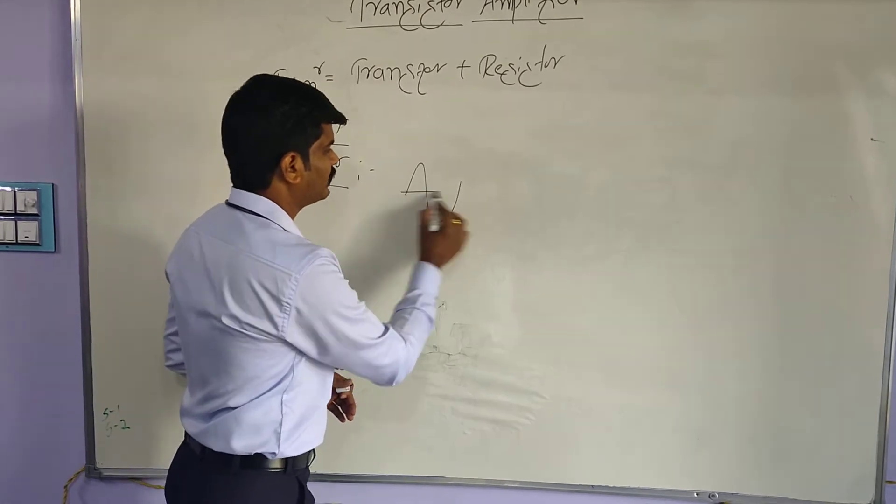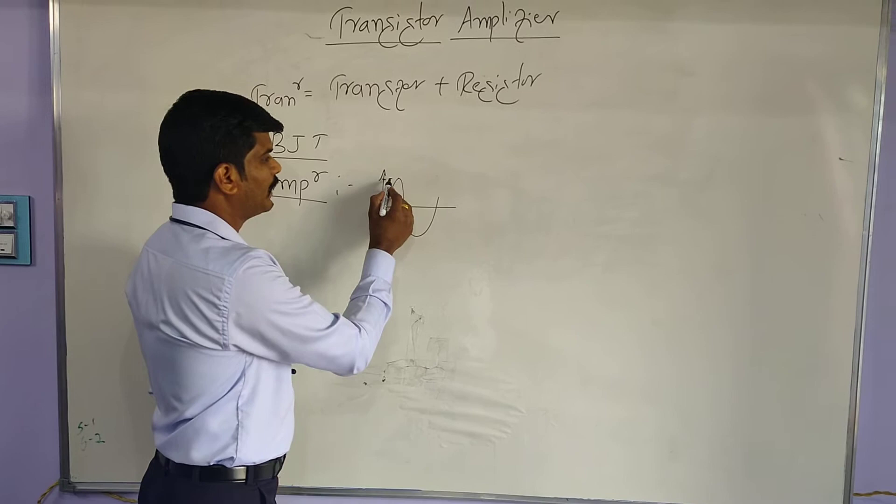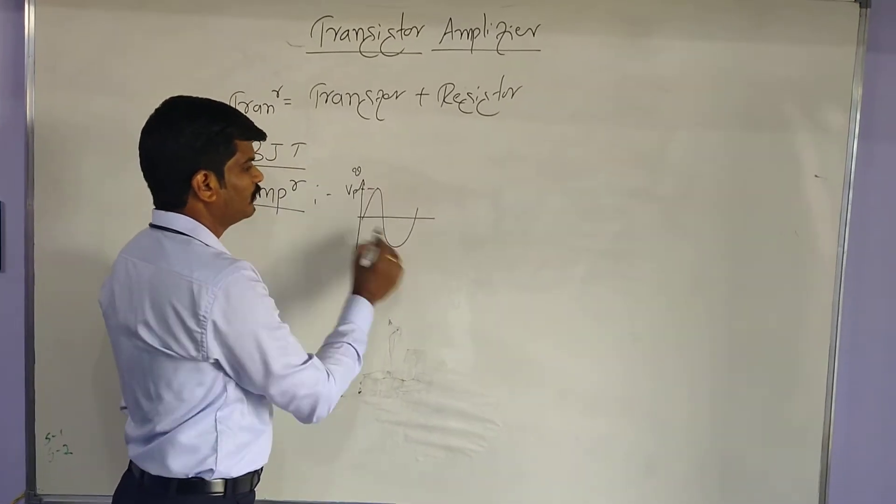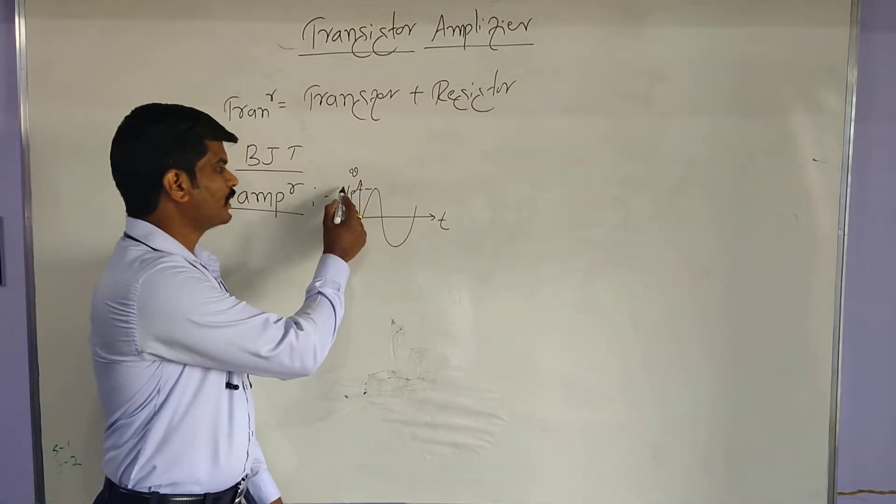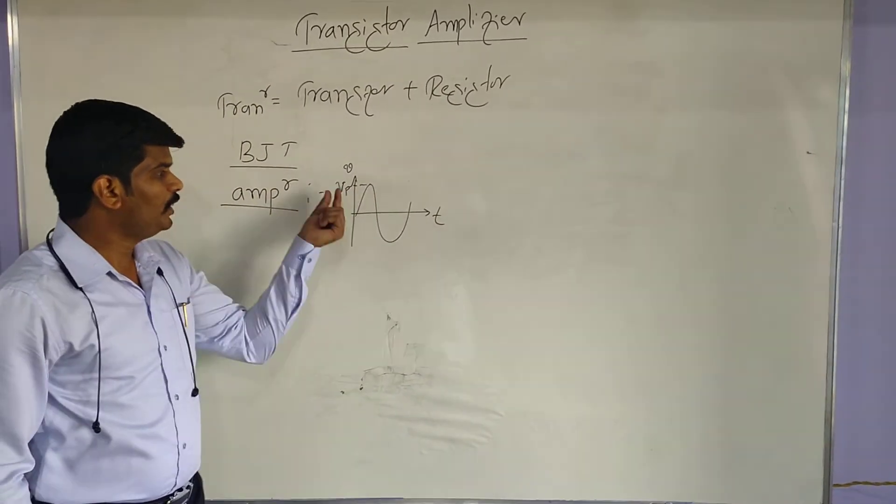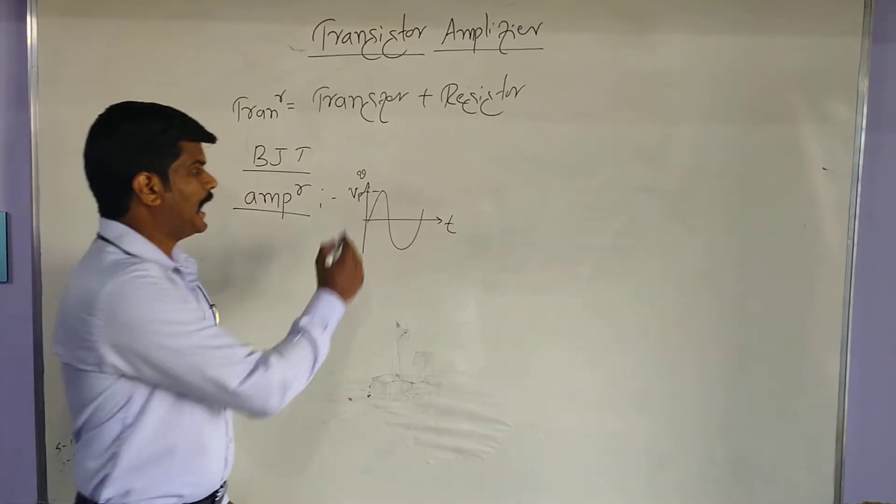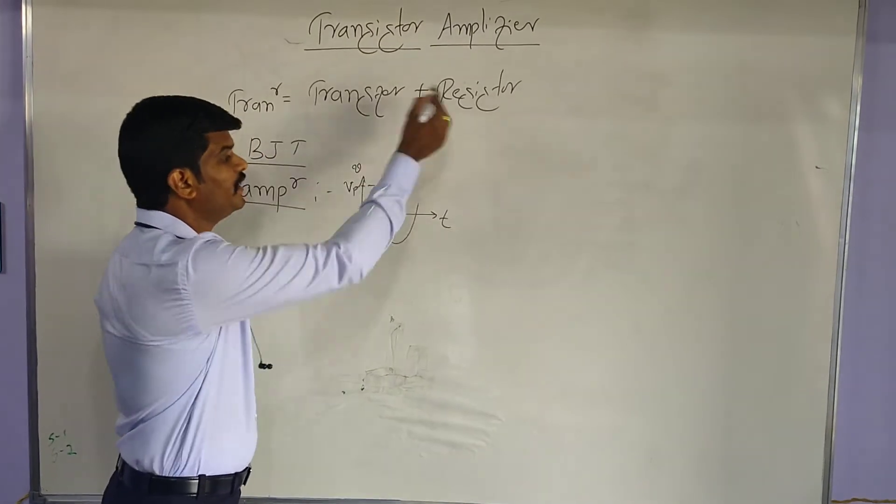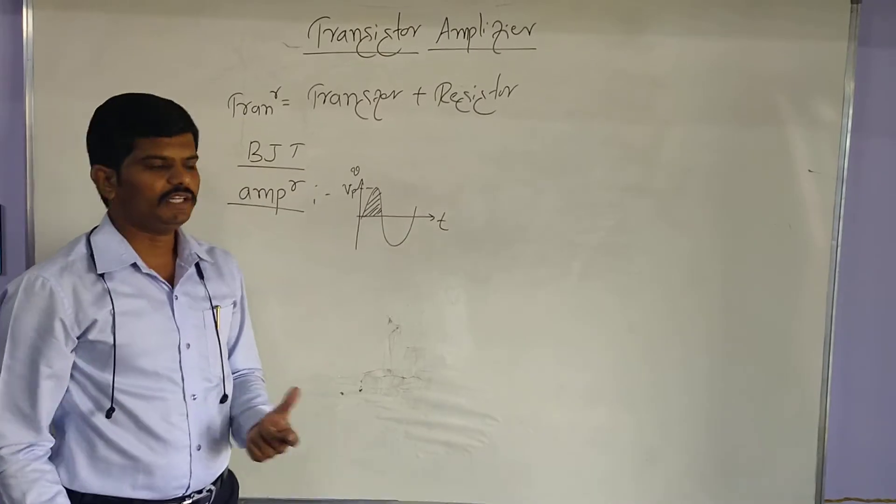For example, the amplitude, this is known as an amplitude, Vp or V maximum. This is a time-varying function, time-varying signal. So here we say Vp is the peak voltage or maximum voltage, that is nothing but an amplitude. The amplitude of a signal can be increased, this can be increased to greater extent. That is an amplification.